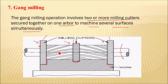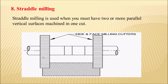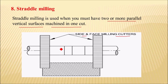Next is straddle milling. Here you can see a setup with side and face milling cutters. Straddle milling is used when you need to machine two or more parallel vertical surfaces in one cut. These milling cutters are separated by spacers, as you can see here.